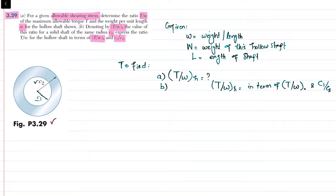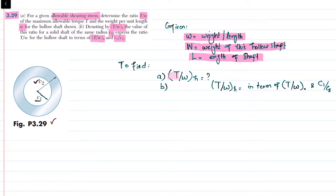From Figure 3.29, you can see this is a hollow shaft having internal radius c1 and external radius c2. The weight per unit length is denoted by small w and the length of the shaft is L. The total weight of the shaft, capital W, is the weight of the hollow shaft. In part A, we find the ratio T over w for this hollow shaft.